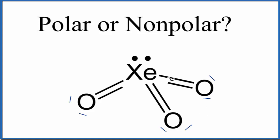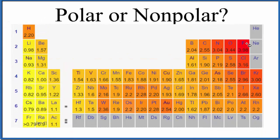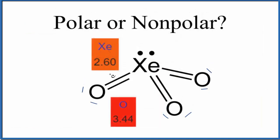With polarity, we want to look at the difference in electronegativity between the xenon and the oxygen. We don't really think of noble gases as having electronegativity, but in cases where they do form bonds, like with krypton or xenon, we do have an electronegativity value. For xenon, that's 2.60. For oxygen, we have 3.44. So we have a pretty big difference in electronegativity — 0.84 — this is a polar bond.